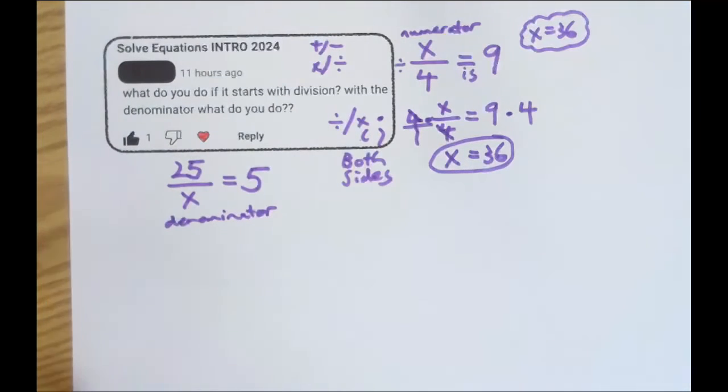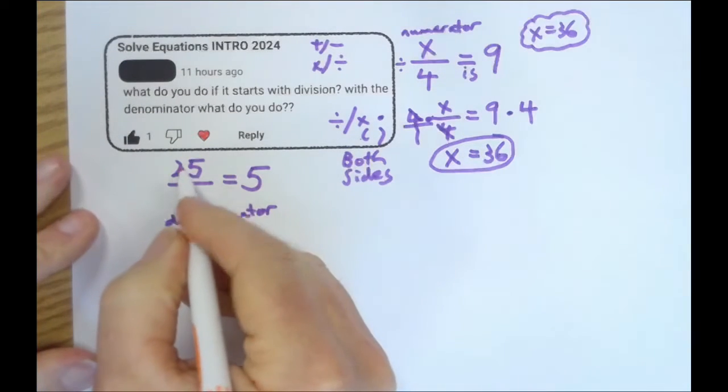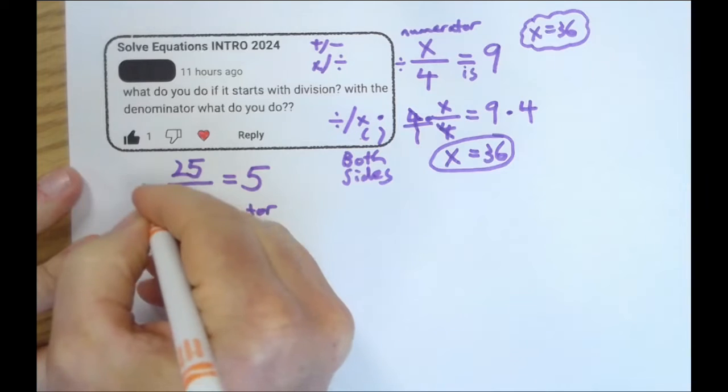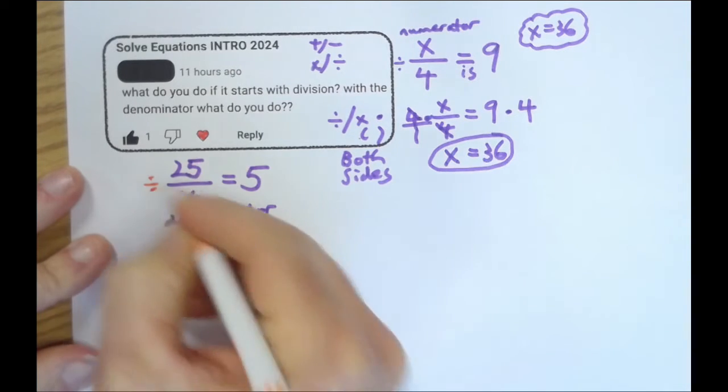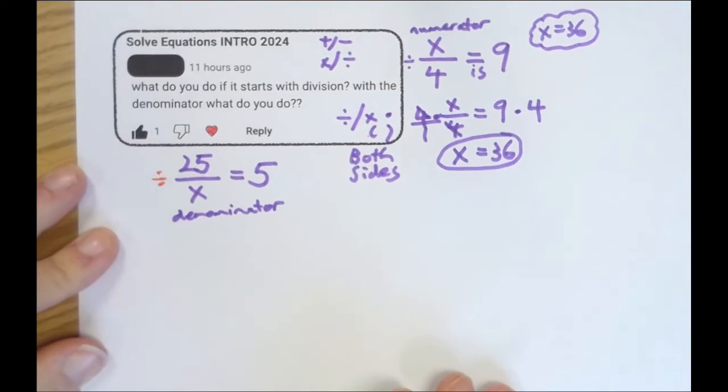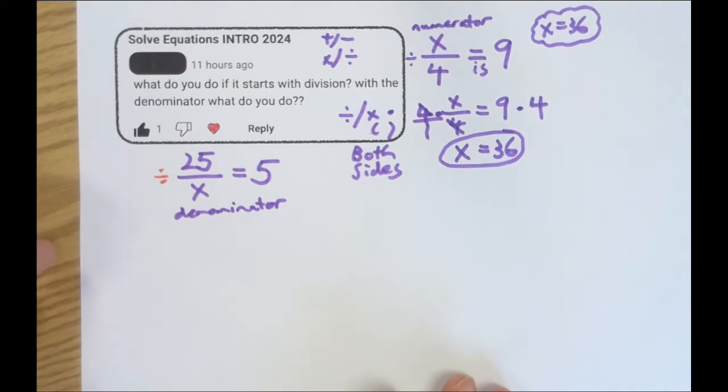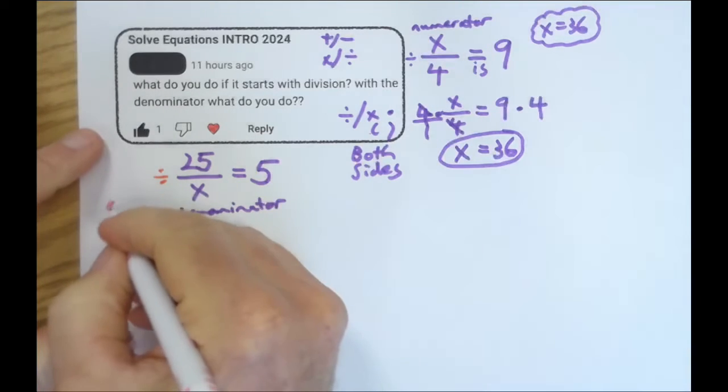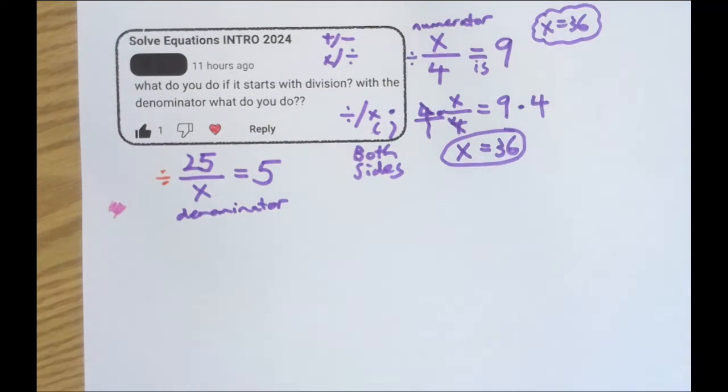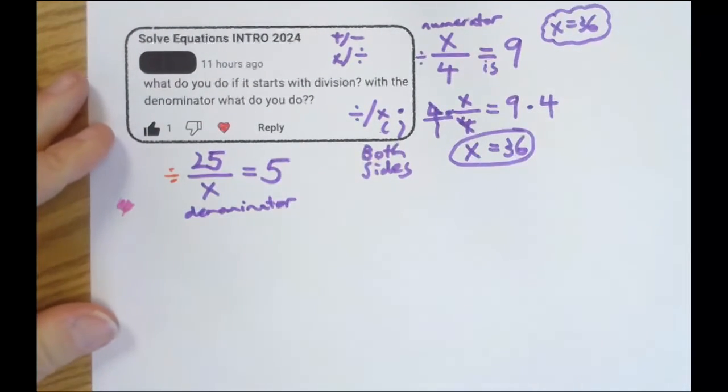Now, the other flavor is, speaking of flavors, let's go orange. This one says 25 divided by some unknown number is 5. You're thinking it, right? You can say it out loud. You know what x is, but you also know we're learning an algebraic process here. We have to make sense of it at the most basic level to make sense of it at a complicated level.